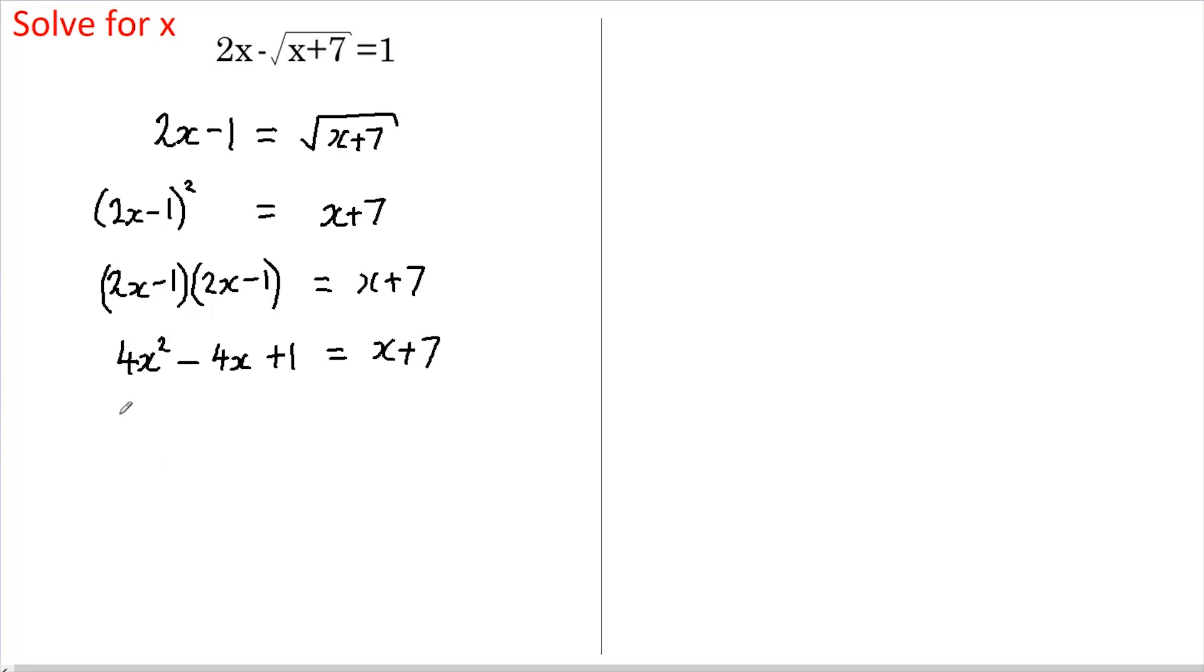Now let's group these all on the left hand side. So we get 4x squared minus 4x minus another x is minus 5x. And plus 1 minus 7 gives us minus 6 equals 0.